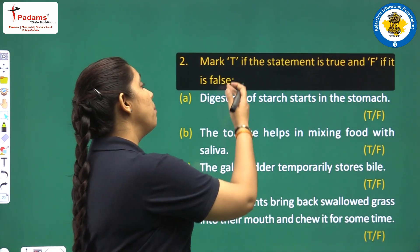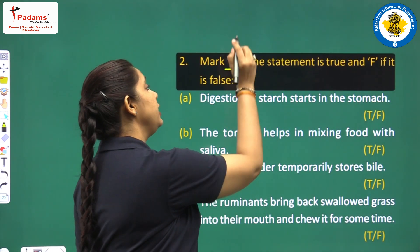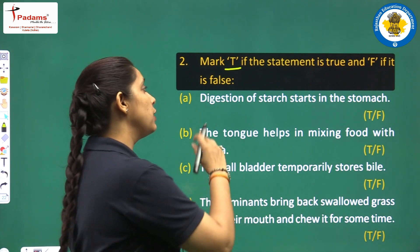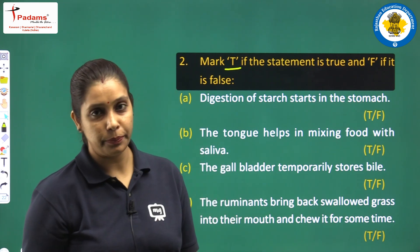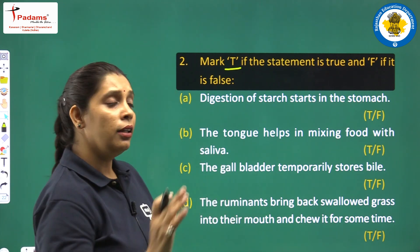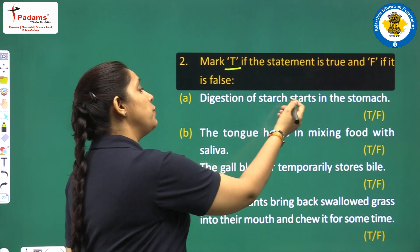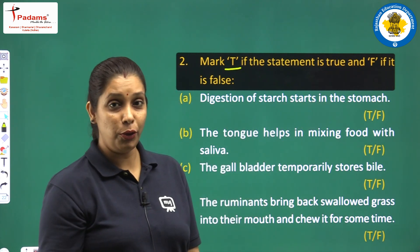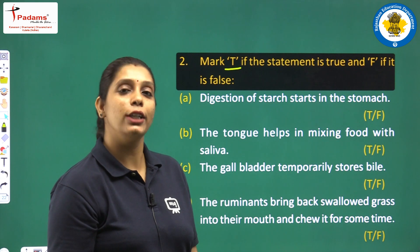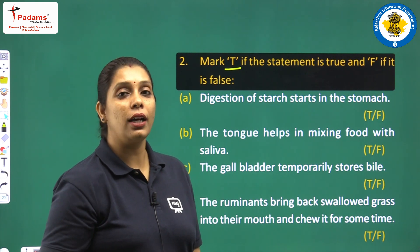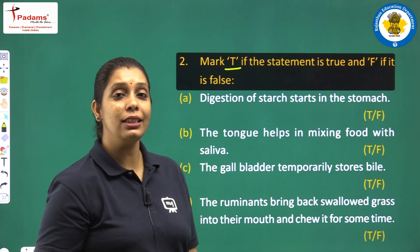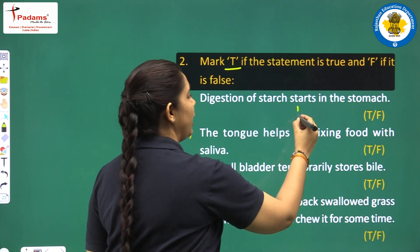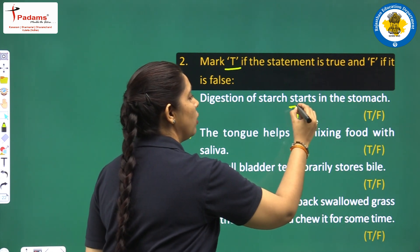Our next question is mark T if the statement is true, F if the statement is false. First: digestion of starch starts in the stomach. Is it true? No, it is wrong. Digestion of starch takes place in the buccal cavity. So we have to write false.